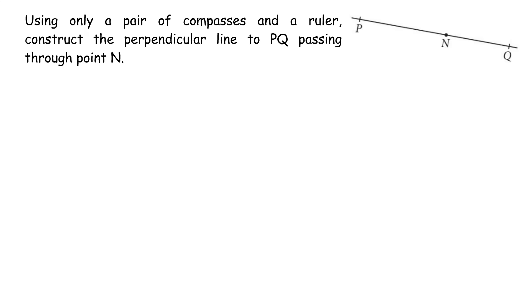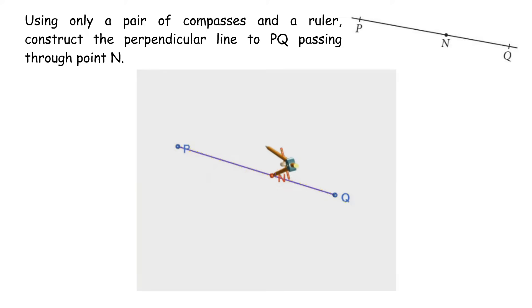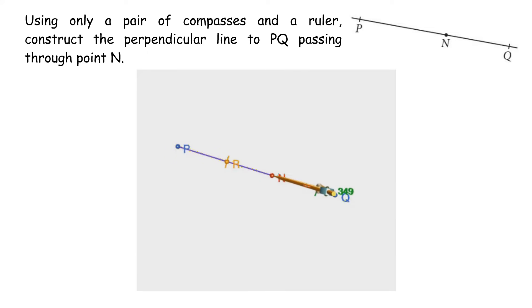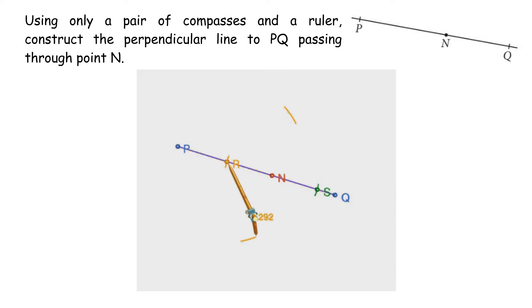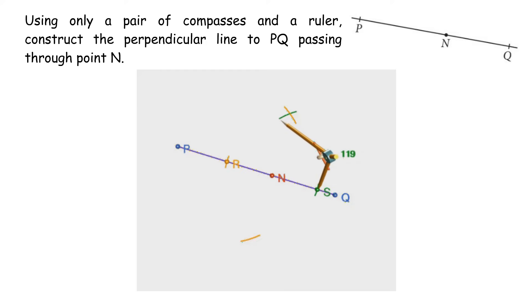Using only a pair of compasses and a ruler, construct the perpendicular line to PQ passing through point N. 1. With the same distance on the compass from N intersecting PQ, label the two points of intersection as R and S. 2. Widen the compasses to a distance more than NR or NS, and with the same distance from R and from S construct two arcs above and below PQ so that the arcs intersect. 3. Draw a line joining N and the points of intersection of the arcs constructed.